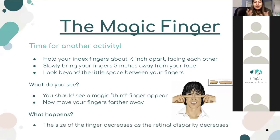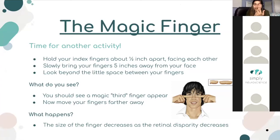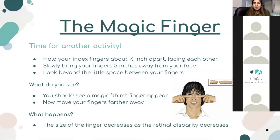So what's basically happening here: your image in your right eye is different from your image in your left eye. The size of the finger decreases as the retinal disparity decreases. The further an object is from you, the more similar the images in the two eyes look. The closer it is, there's a huge difference — whereas if you're looking at something a little bit further, you don't see as much of a difference in either eye. Basically, as you move your fingers further away, the retinal disparity decreases and suddenly it seems like a third finger appears.